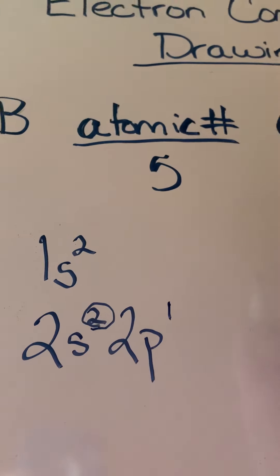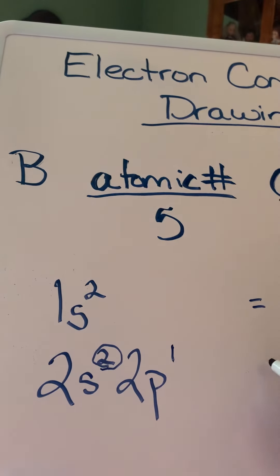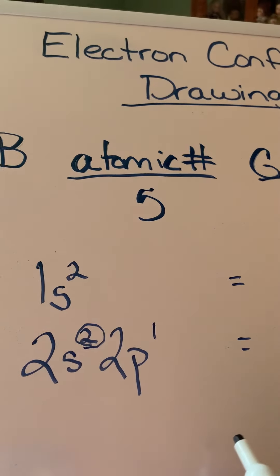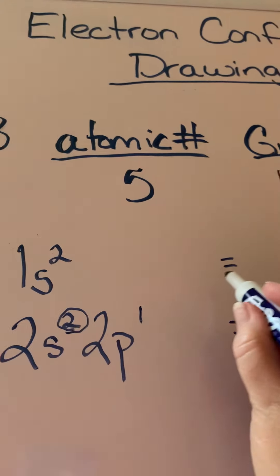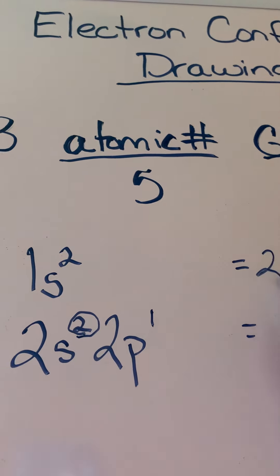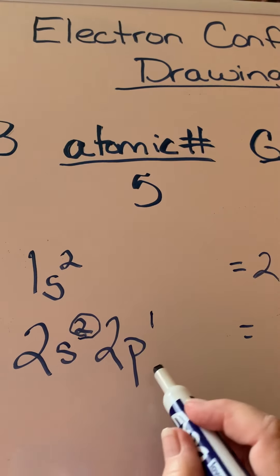So what I always like to do when I'm doing this, especially when I get to the bigger ones, is to come out here to the side and just kind of add these up as I go. So on level one I have a grand total of two electrons.